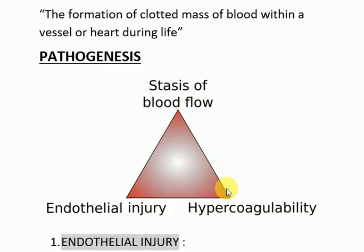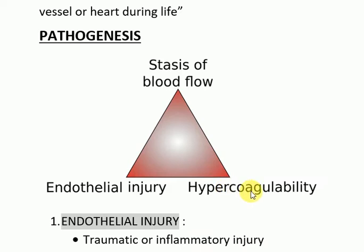The third factor is hypercoagulability. If there is any disruption or alteration in the coagulation pathway, that predisposes to thrombosis. These coagulation pathways are the intrinsic and extrinsic pathways, which will be discussed in the hematology section. Any disruption in these pathways leads to a hypercoagulability state, and that state leads to thrombus formation.